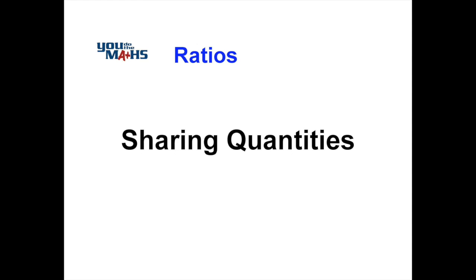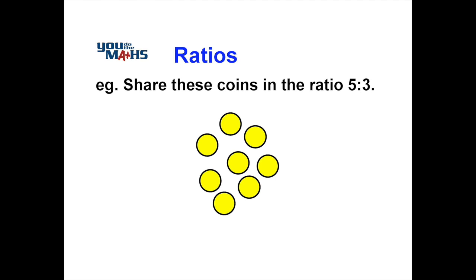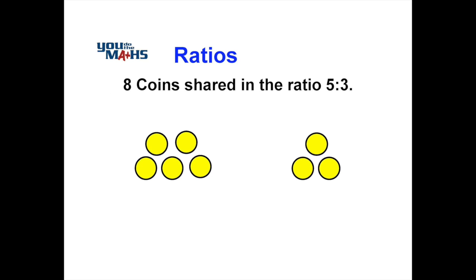In these examples we look at how to use ratios to share quantities. For example, we can see here we've got eight coins. They're the ones in yellow and we're going to split them up in the ratio 5:3. Now in this case it's quite simple.